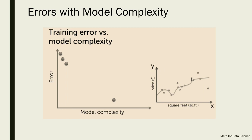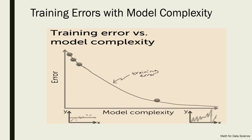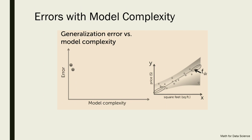So the final graph of training error versus model complexity shows that where the error is high corresponds to the simplest model, and with increasing complexity the error keeps decreasing — possibly in some sort of exponential relationship. This is the training error versus model complexity graph.